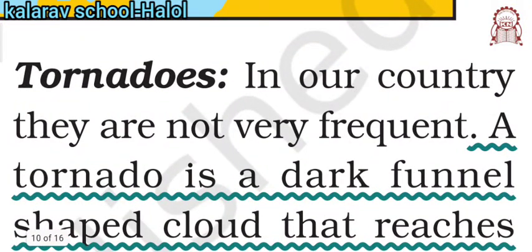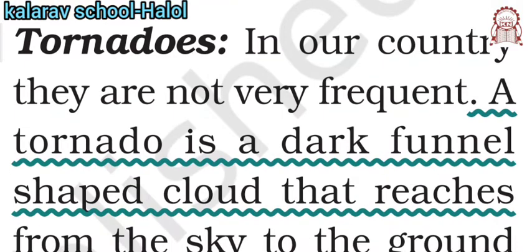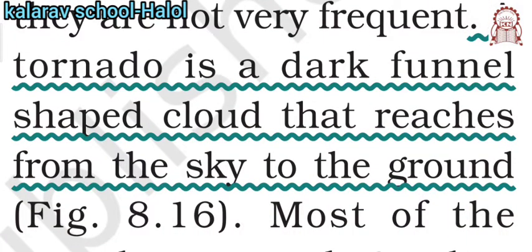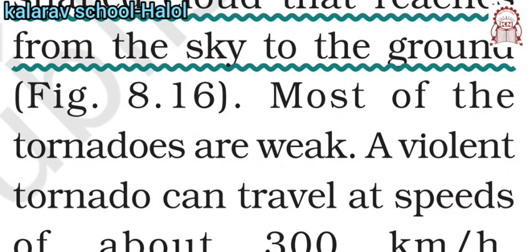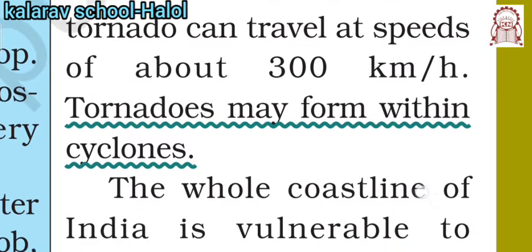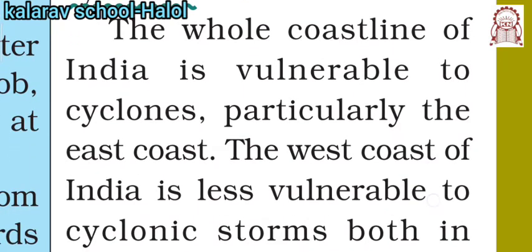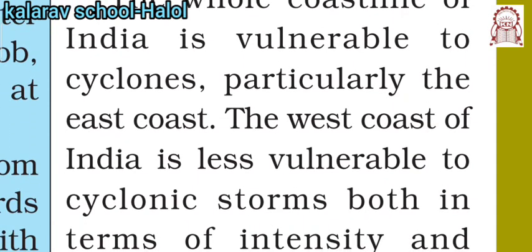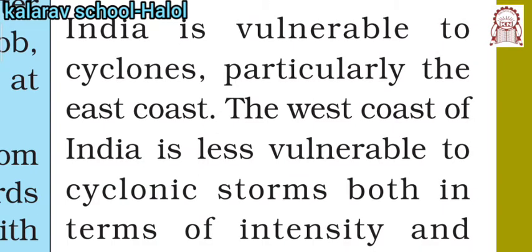Next is tornadoes. In our country, tornadoes are not very frequent. A tornado is a dark funnel-shaped cloud that reaches from the sky to the ground. Tornadoes can travel at about 300 kilometers per hour and may form within a cyclone. The whole coastline of India is vulnerable to cyclones, particularly the east coast — the west coast of India is less vulnerable.